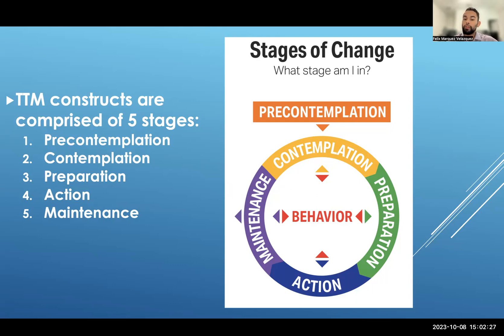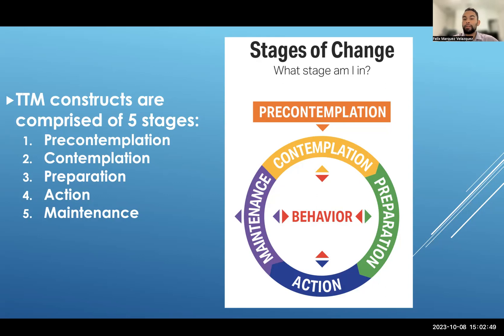It's important to note that if we look at the visual, the stages of change are cyclical. They're in a circle, which means individuals may be stagnant — they can move forward or they can move backwards between the phases — because the trans-theoretical model is under the belief that change occurs as a process over time and not an event.